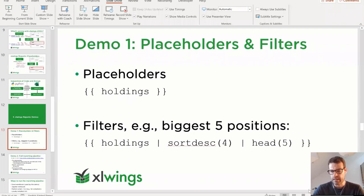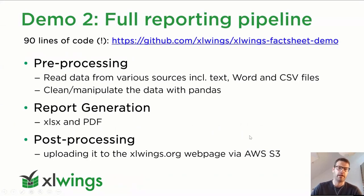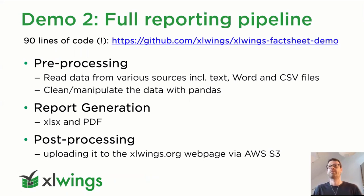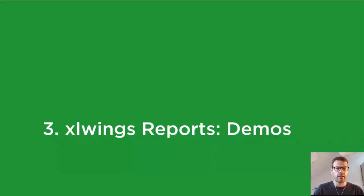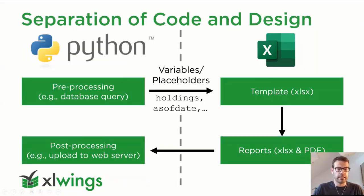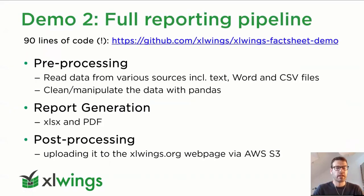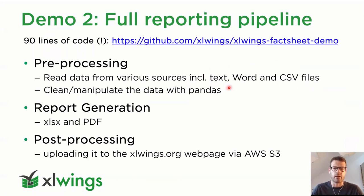The second demo is going to be a full reporting pipeline. I'm really going to show you a complete sample of how things could look if you have to prepare reports or fact sheets on a regular basis. We're going to go through the full process — including data acquisition, producing the Excel and PDF report, which we skipped over before, and then actually uploading to the XLWings webpage live. We're going to take care of a few different sample sources like text, Word, and CSV files.